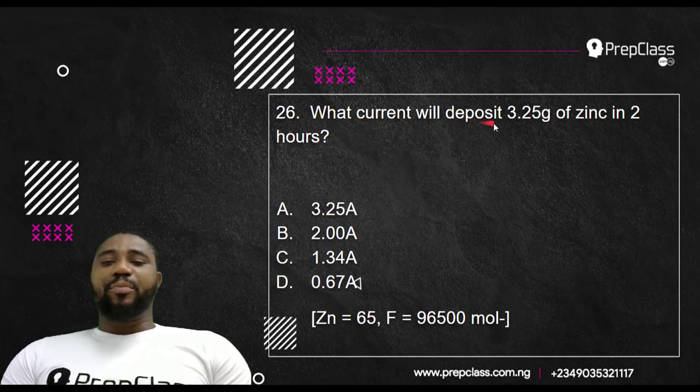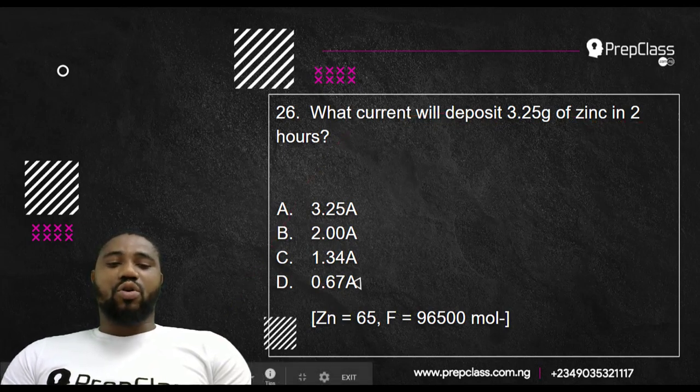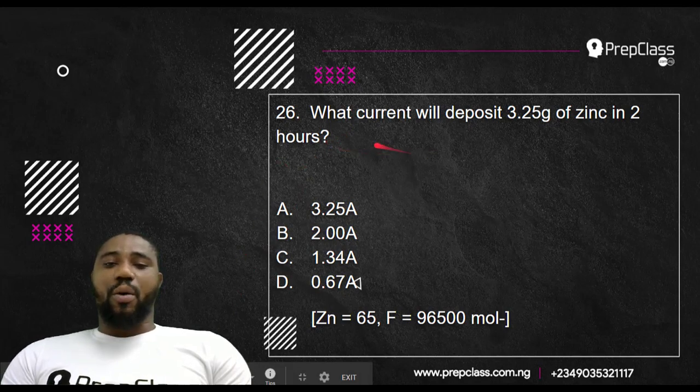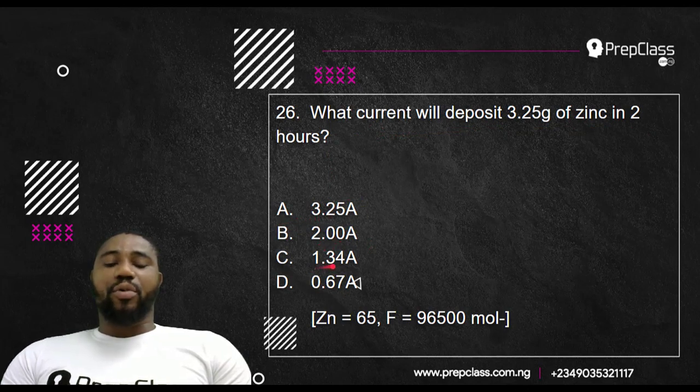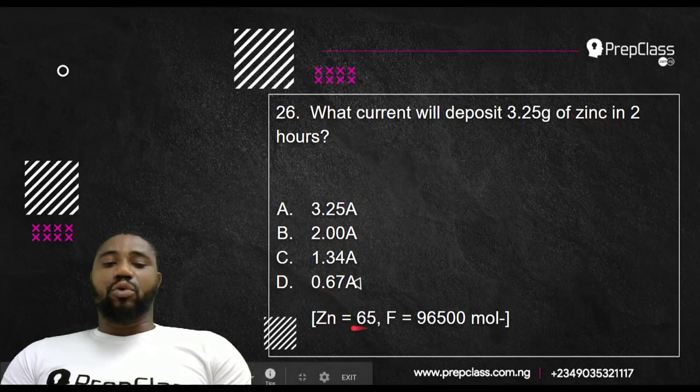Question number 26. What current will deposit 3.25 grams of zinc in 2 hours? Is it 3.25 amps? Is it 2.0 amps? Is it 1.34 amps? Is it 0.6 amps? They're giving us zinc with a molar mass of 65 and 1 faraday as 96,500.